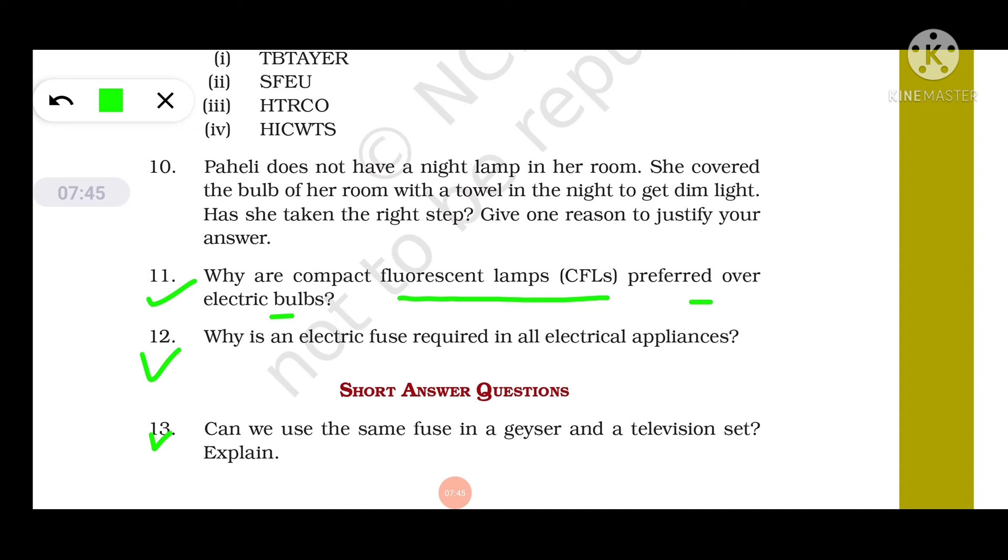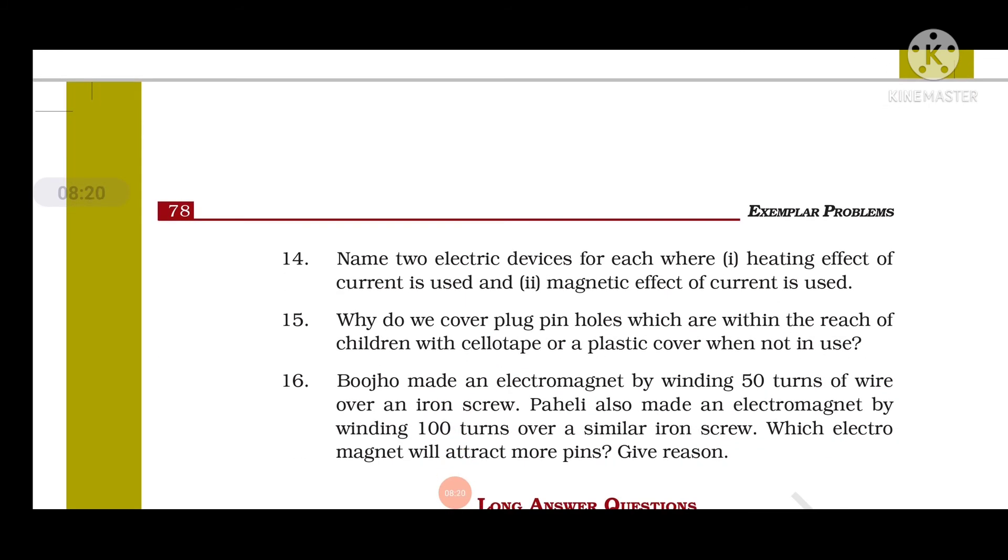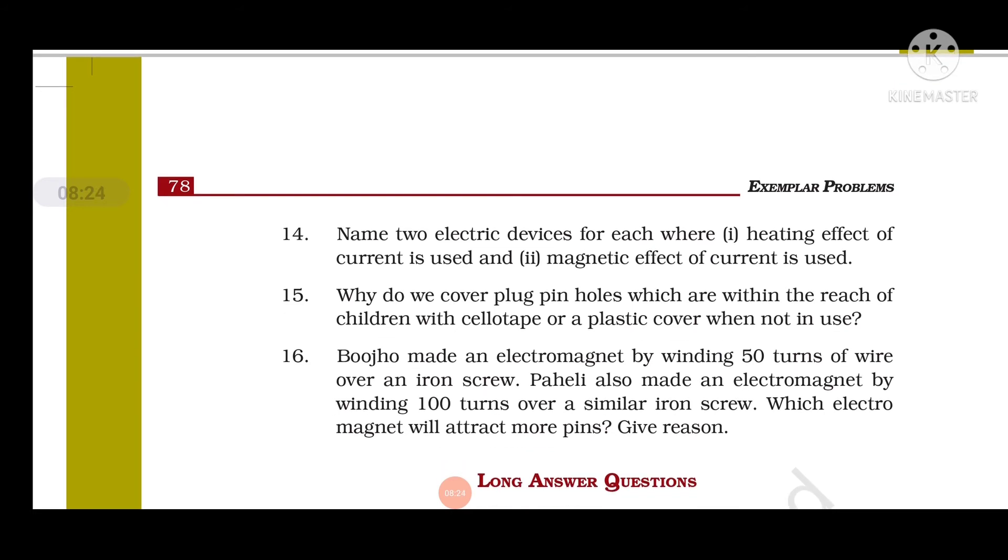Question number 13: Can we use the same fuse in a geyser and a television set? Explain. No, we cannot use the same fuse in geyser and television because geyser and television set require different amounts of current. Geyser requires high voltage and television works even in low voltage. Therefore, the fuses used in these will be of different ratings. Question number 14: Name two electrical devices for each where heating effect of electric current is used. Heating effect is used in geyser and room heater. Magnetic effect of current is used in electric bells and in cranes to lift magnetic materials.